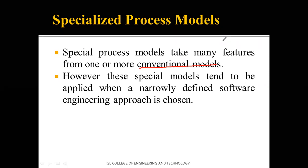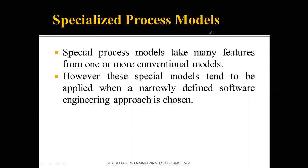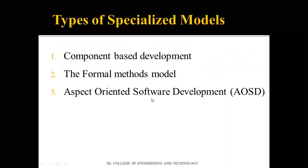These specialized process models are used when a narrowly defined software engineering approach is chosen. For example, if you need to reduce cost, you might focus on reusable components, using one type of model like component-based development. If you're focusing on performance, availability, or load time, you use a different model. There are three types of specialized models: component-based development, the formal methods model, and the aspect-oriented development model.